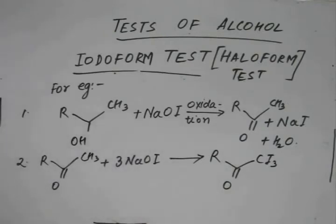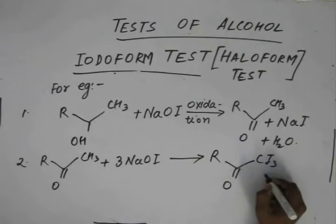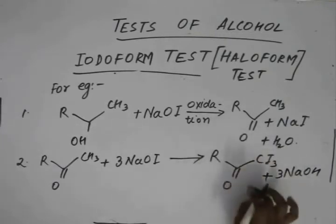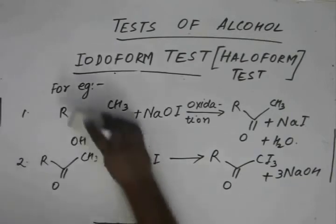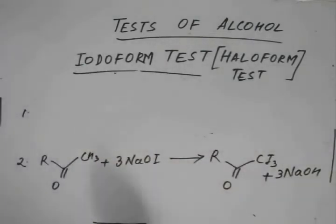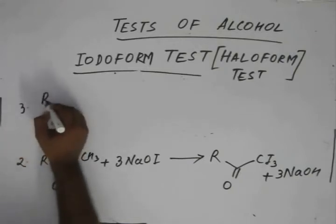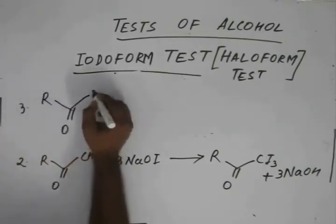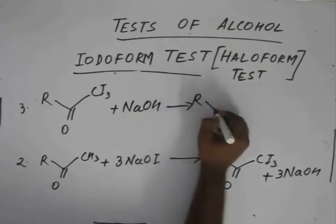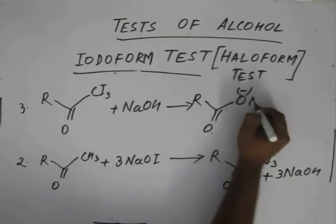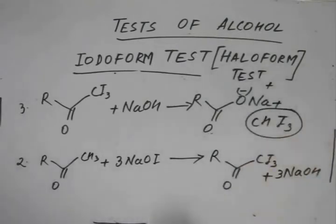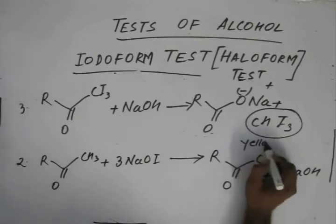In the second step, when this carbonyl compound reacts with three moles of NaOI, we get CHI3 and the CI3 group along with the base. In step three, when this halogenated compound reacts with sodium hydroxide, we get the acid salt and CHI3, which is responsible for the yellow color.